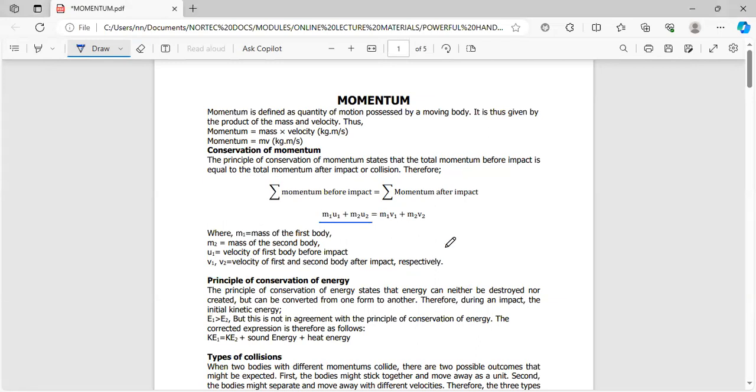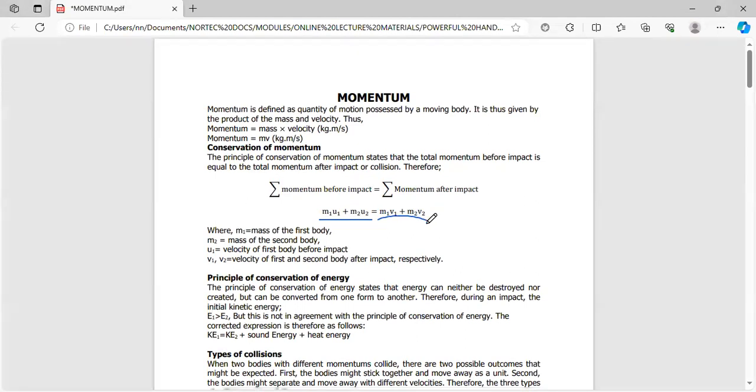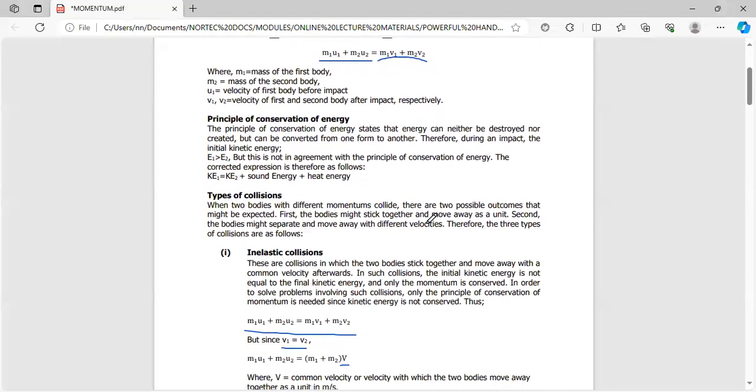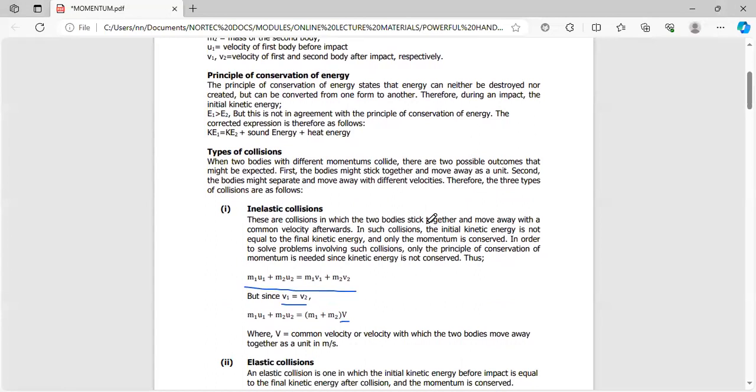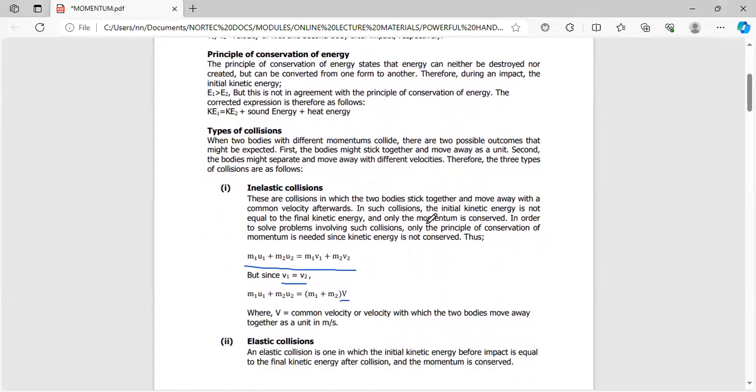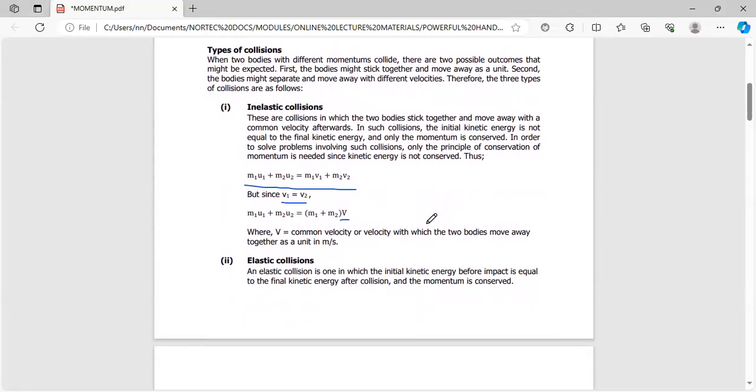M1U1 plus M2U2 refers to the momentum before impact. When we introduce V, that's for the final: M1V1 and M2V2. The principle of conservation of energy is also involved because we want to account for every sort of energy during and after the collision.